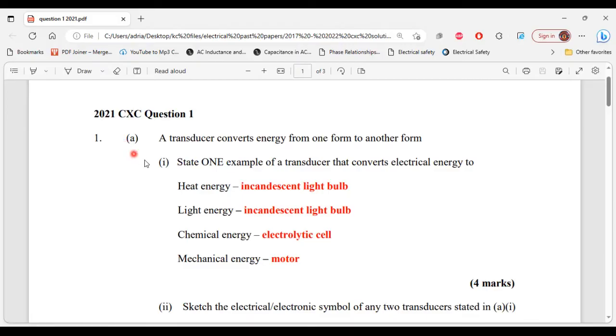Part A. It says a transducer converts energy from one form to another form. Part 1 of A, it says state one example of a transducer that converts electrical energy to heat energy, light energy, chemical energy, and mechanical energy.